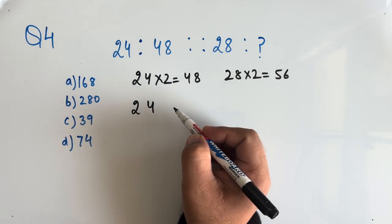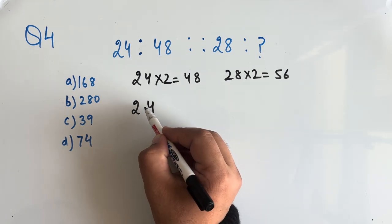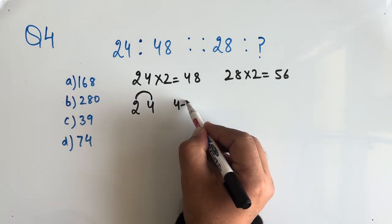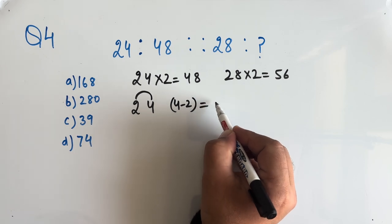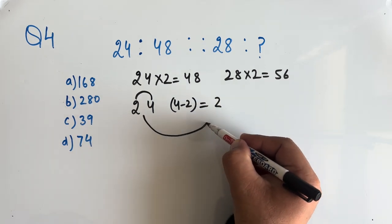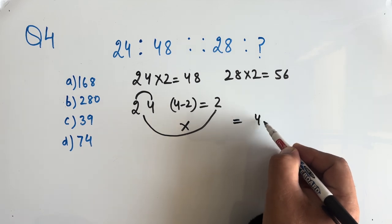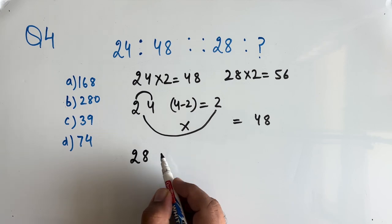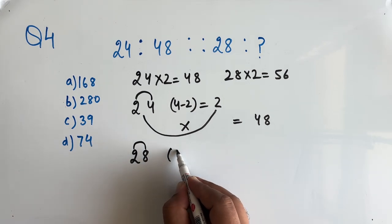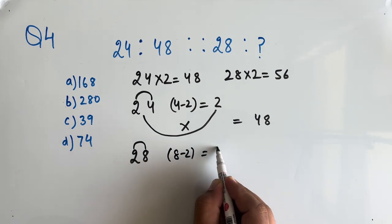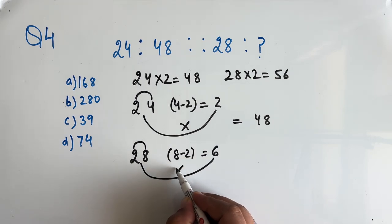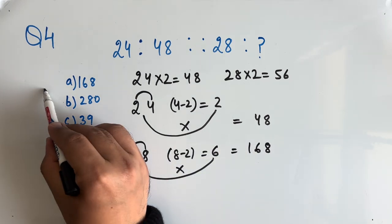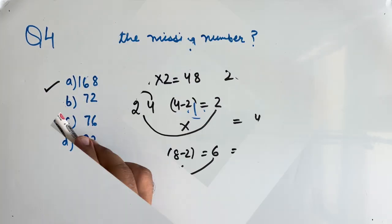For 24, if we find the difference between the digits, that is 4 minus 2, we get 2, and now if we multiply 24 by 2, we get 48. For 28, if we find the difference between the digits, that is 8 minus 2 is 6, and if we multiply 28 by 6, we get 168. So option A, 168 will be the correct answer.